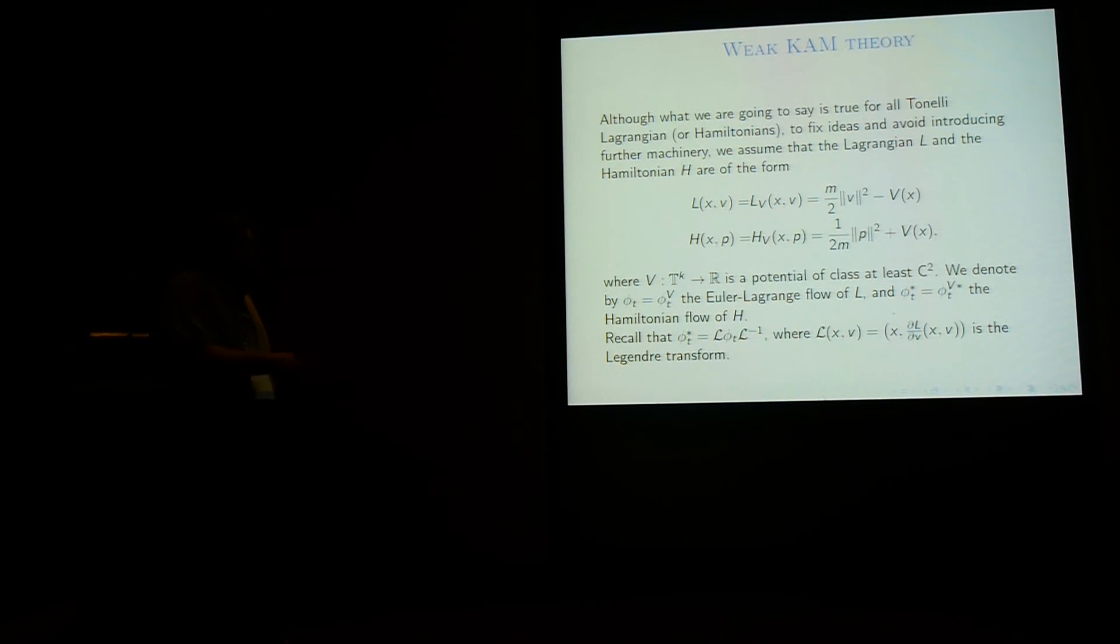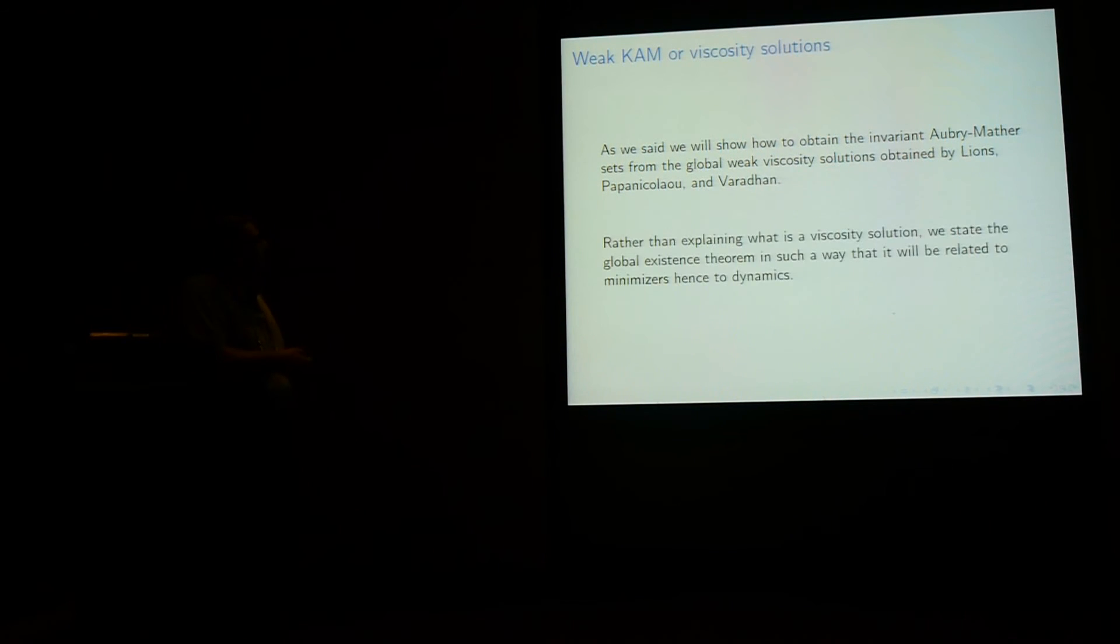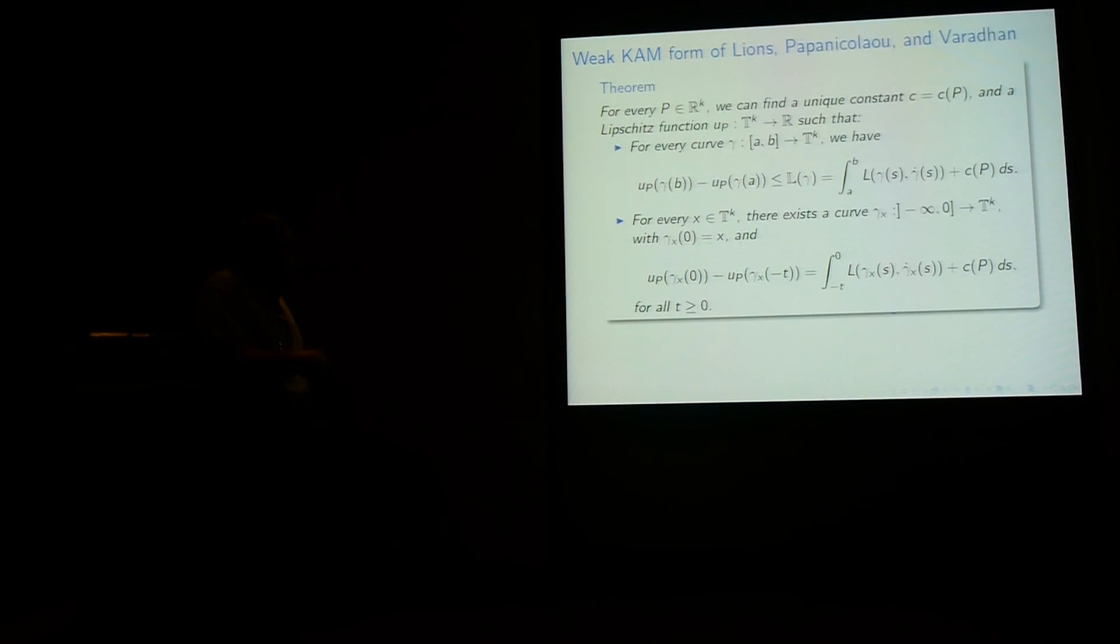So the Lagrangian is kinetic energy minus potential. And the Hamiltonian is kinetic energy plus potential. And we just drop also the subscript for the Euler-Lagrangian flow and the dual Hamiltonian flow. Now the Legendre transform conjugates the two. So this is what it is. So we will show how to obtain the invariant of the Mather set from the global weak viscosity solution obtained by Lions, Papanicolaou and Varadhan. And in fact, I'm not going to tell you what is the viscosity solution, sorry, but I'm going to just state the theorem the way I discovered it in fact without knowing what is the viscosity solution. And then Denis Hers told me you should look at viscosity solution and that helps me.